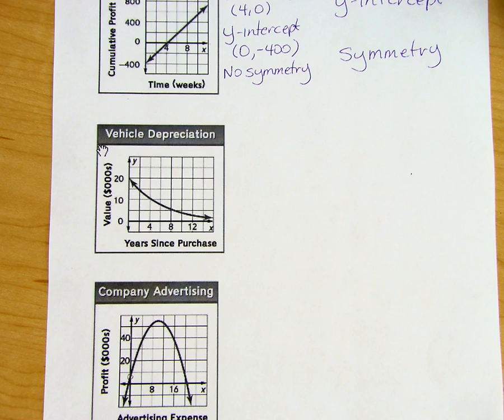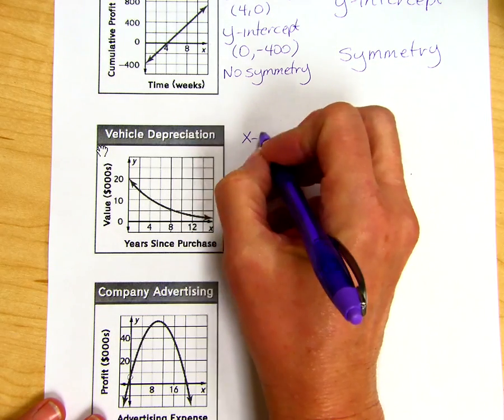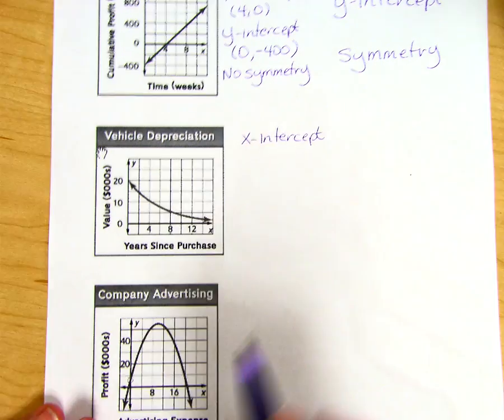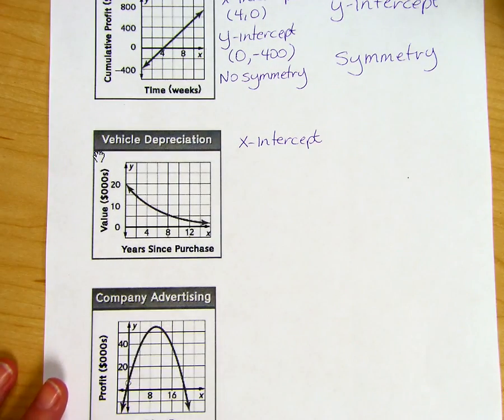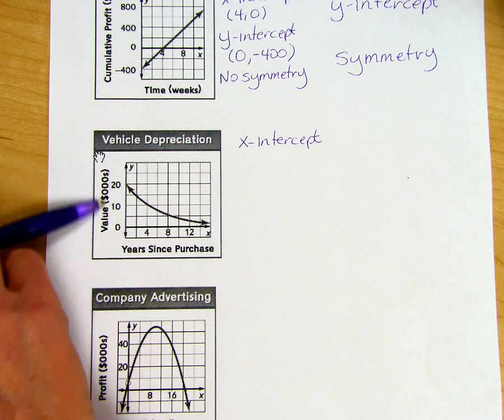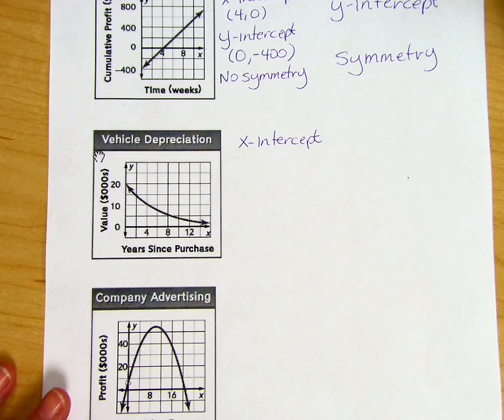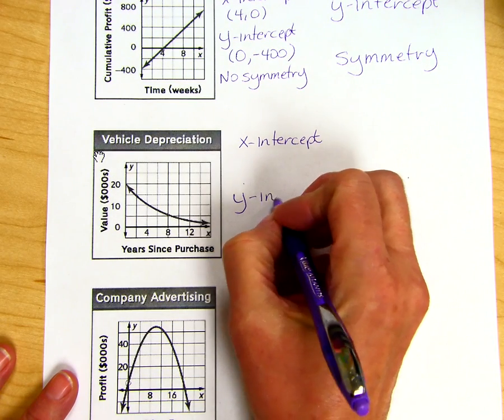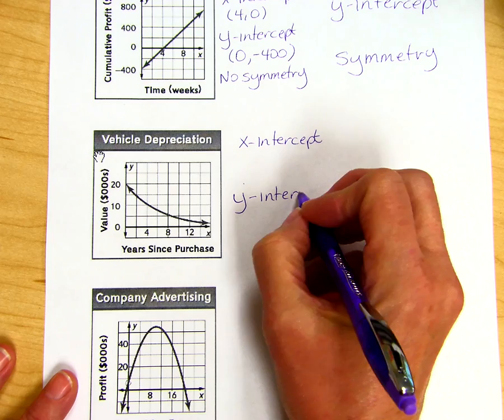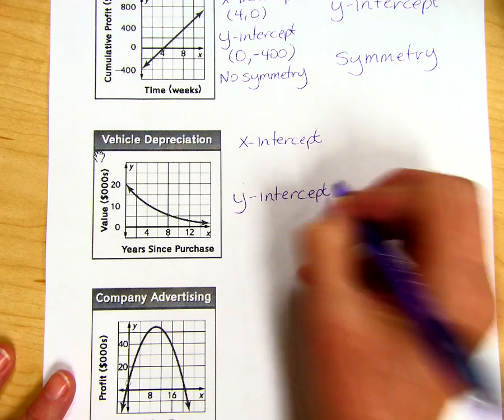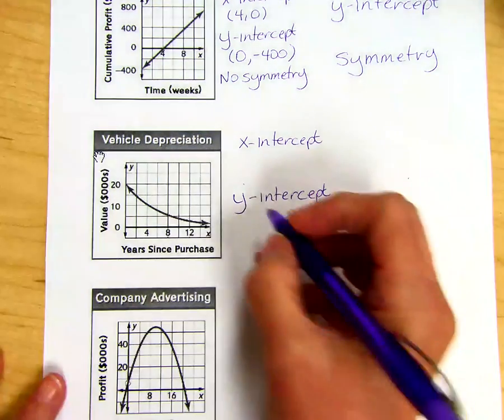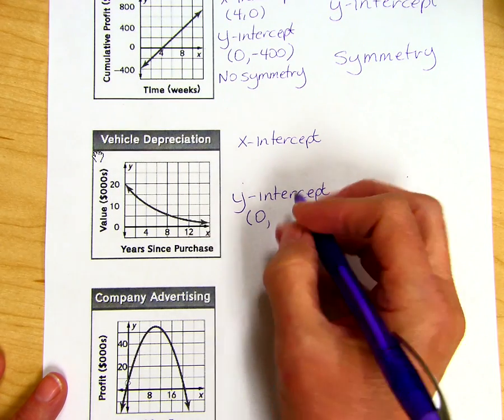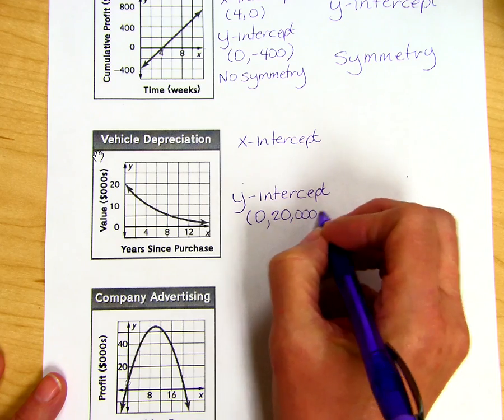The next graph is vehicle depreciation. Looking at the x-axis, we see that is the year since we have purchased a vehicle, and the y-axis tells us the value of that vehicle. We will come back to the x-intercept in just a moment. Let's look at the y-intercept. Looks like they originally bought the car for $20,000. So the first year they owned it, the vehicle was worth $20,000.